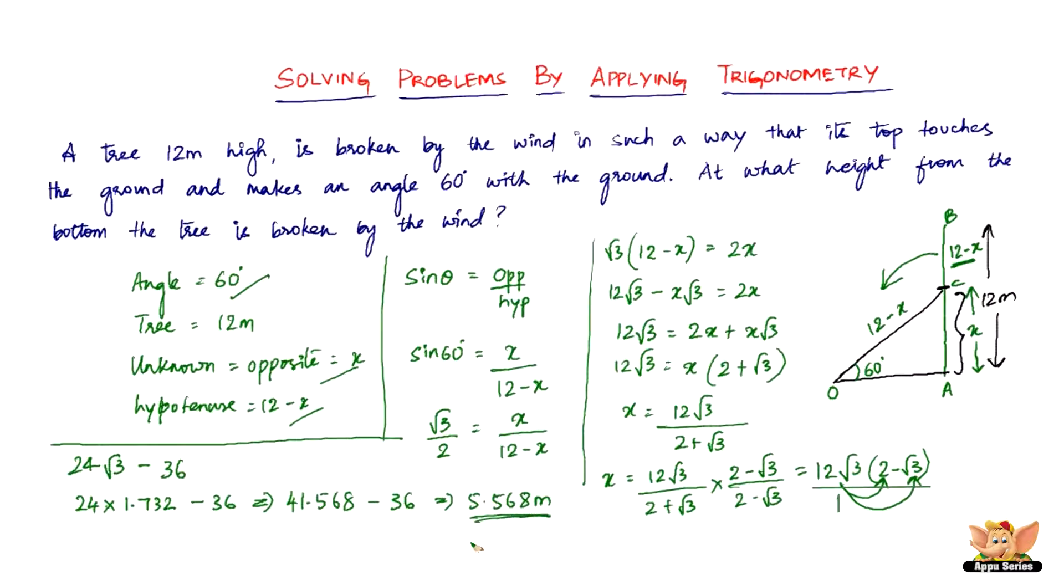So here we are. The height from which the tree got broke by the wind is 5.568 meters. So the X here is nothing but 5.568 meters. So this concludes this video. I'll see you in the forthcoming videos with more such problems.